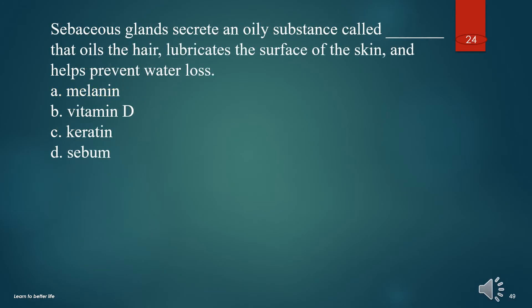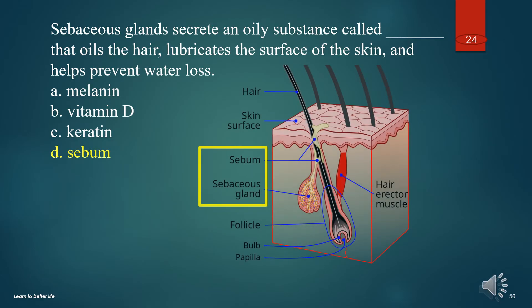Sebaceous glands secrete an oily substance called what that oils the hair, lubricates the surface of the skin, and helps prevent water loss? A. Melanin. B. Vitamin D. C. Keratin. D. Sebum. The answer is D. Sebum.